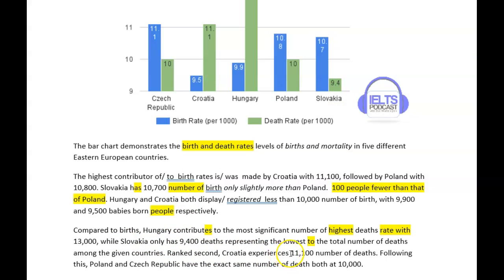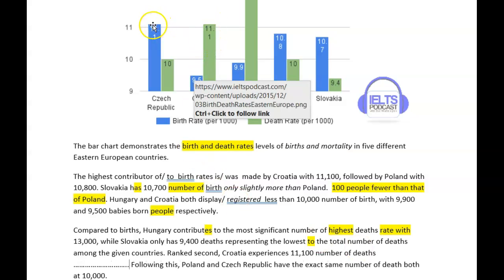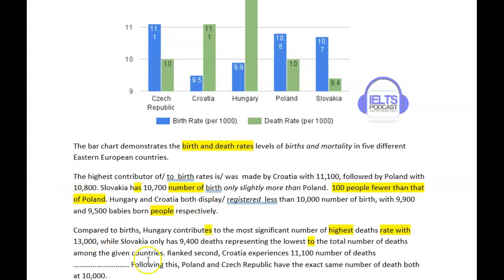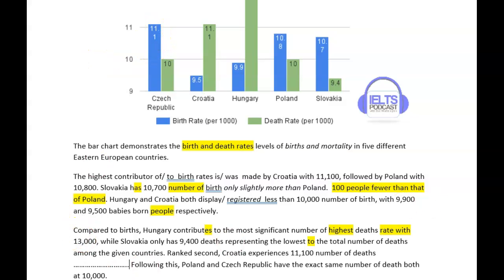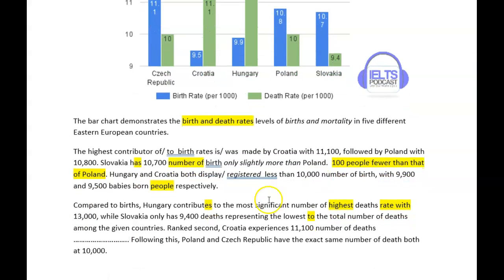Croatia experienced 11,100, which is the number of deaths. So link this together — which was the same number of births in the Czech Republic. So don't just do births all the way through and deaths all the way through — you have to compare. This is a lovely one for comparing: Croatia experienced 11,100 number of deaths, which equaled the number of births in the Czech Republic. And then additionally, Poland and the Czech Republic have the same number of deaths. That's absolutely fine.